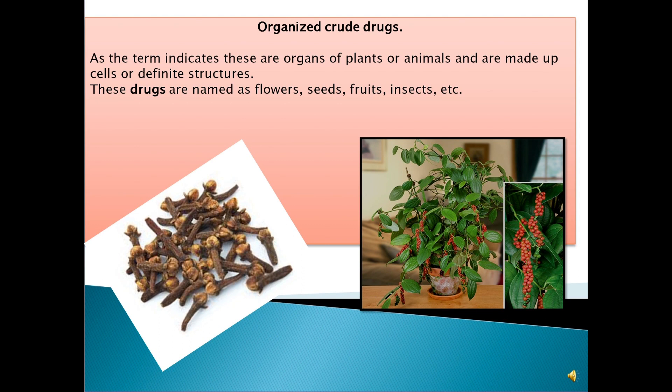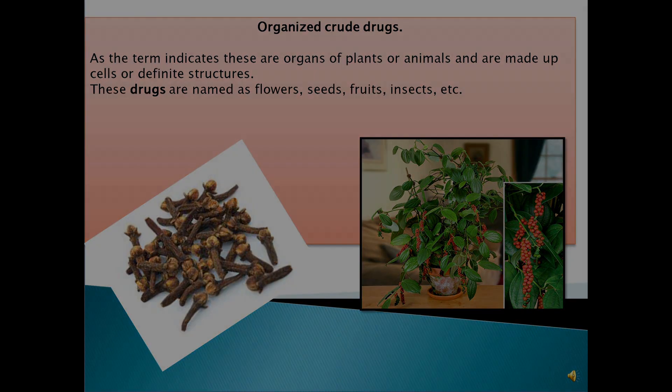What are organized drugs? The term indicates the organs of plants or animals and are made up of cells with a definite structure. These are the organized drugs. Can you identify the name of the drug? Is it clove? This one is a pepper — pepper is one of the fruit parts.